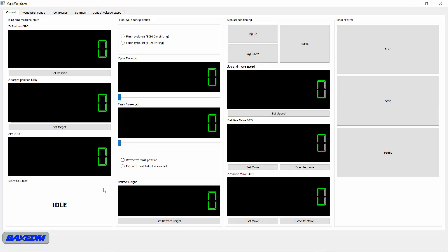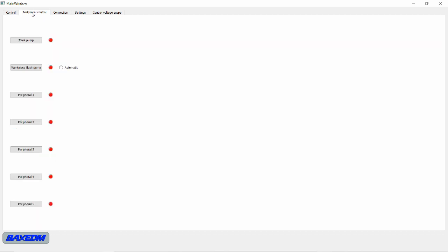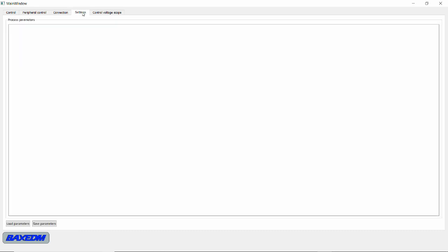Here's the first early version of the user interface for the BEX EDM die-sinking CNC control. It has several tabs. The first tab is for control and overview, where you operate the machine and the cutting process specifically. There's also a tab for peripheral control, really simple, turning pumps on and off. A tab for setting the connection to the CNC controller, the settings tab which is not finished yet. It will hold all the settings that determine the dynamic properties of the cut. And the user preferences, and a live oscilloscope trace of the control voltage.